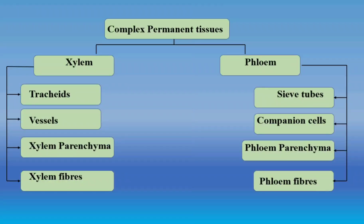Complex tissues can be classified into xylem and phloem. Xylem is further classified into four elements: tracheids, vessels, xylem parenchyma, and xylem fibers. All four elements look completely different from each other, but they together perform a similar function — that is why they are classified as a complex permanent tissue.